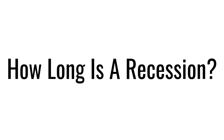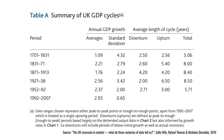Given that we have this very detailed history of recessions in the UK, we can use that data to see how long a recession typically lasts. In this table from the paper by Hills, Thomas, and Dimsdale published in 2010, they break up the three-century period into five sub-periods. In the most recent period between 1952 and 1992, the average downturn lasted about three years, followed by an upturn also lasting three years, giving an overall cycle of just under six years. So if we do get a recession, it may not be over quickly — three years can be a very long time.